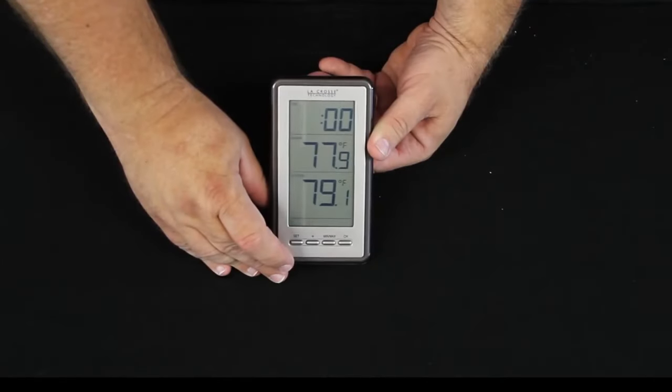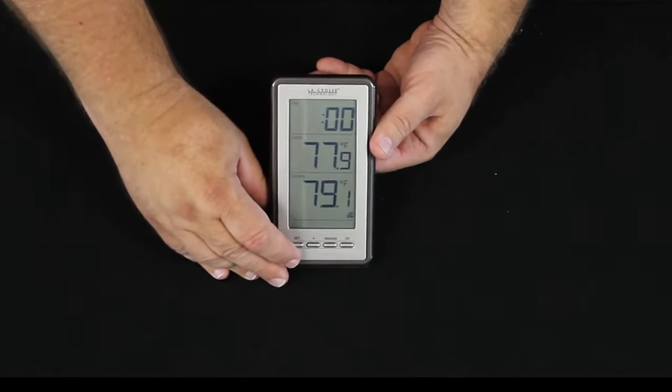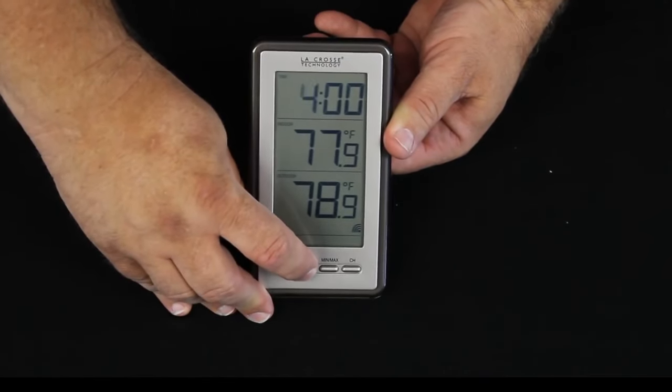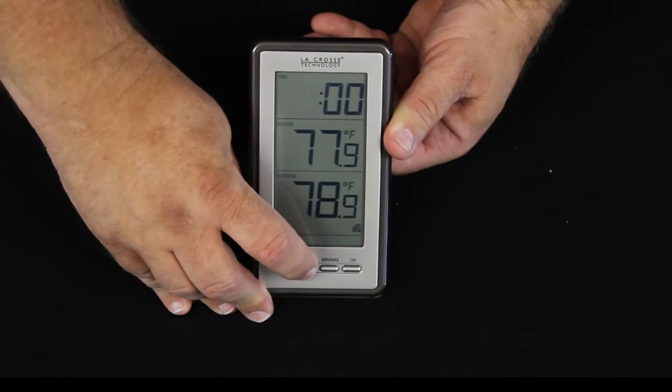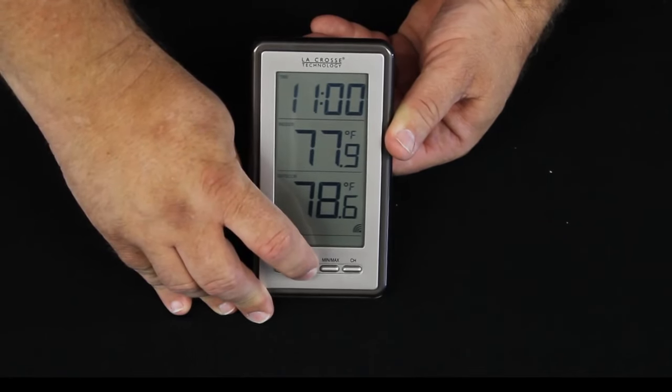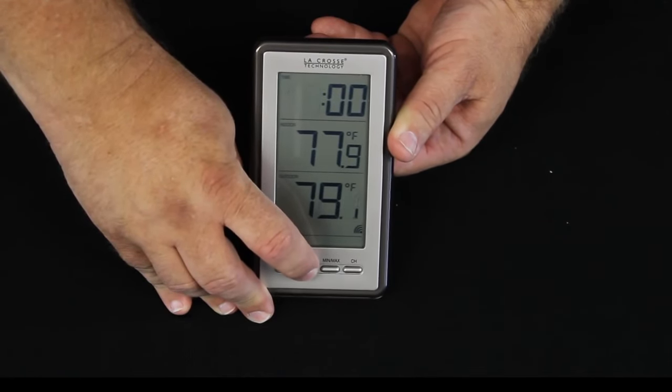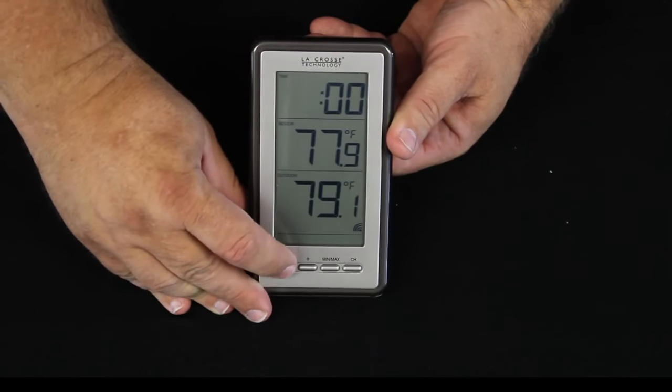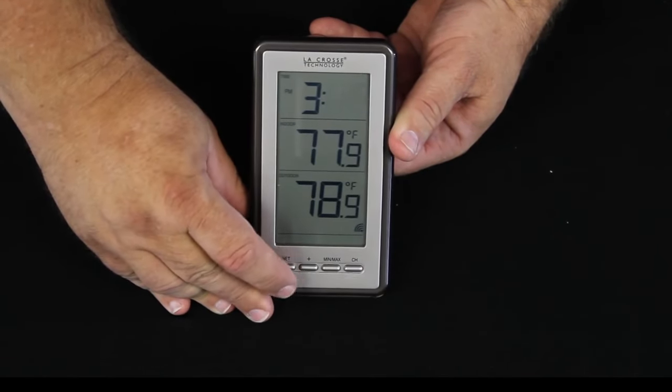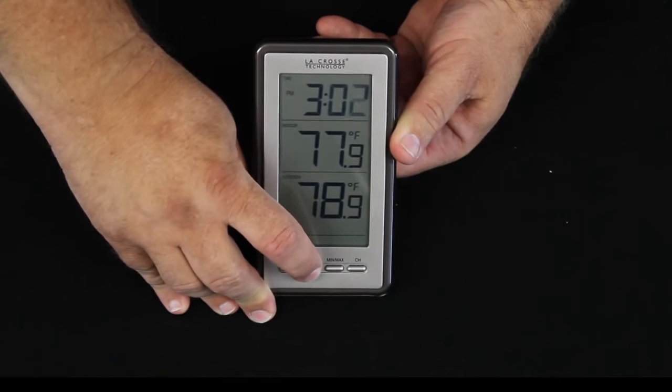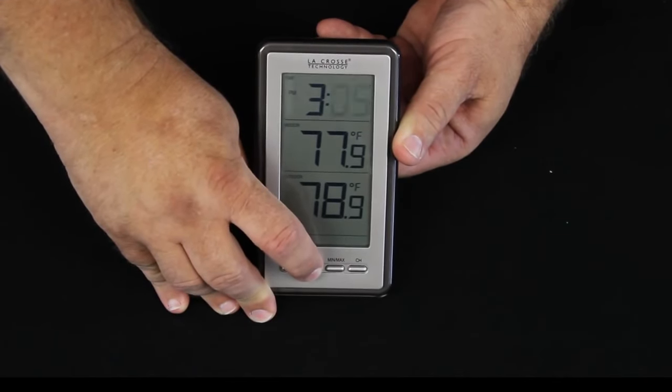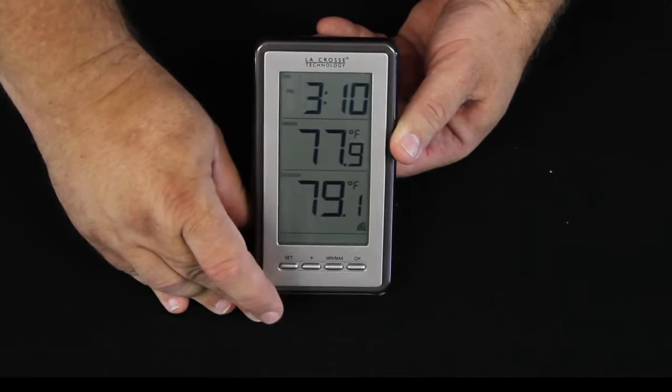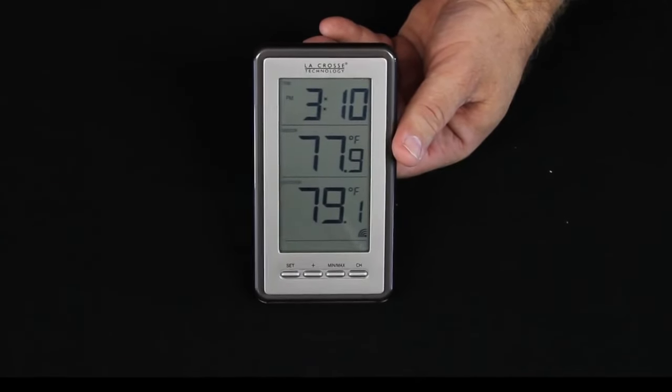We'll hit the set button once again. The hour is flashing and we get to set the time of day now. By using the plus button each click being an hour and we want to watch for p.m. to show up to the left of the numbers and we'll set this for about 3:10 p.m. Once we have our hour set we press the set button and release it once again. The minutes are flashing. We use the plus button again each click being one minute and we're at 3:10 p.m. We click the set button one more time and your weather station is set.